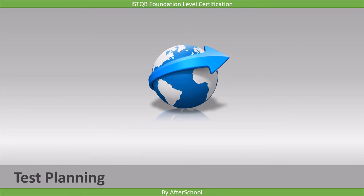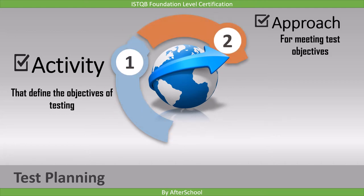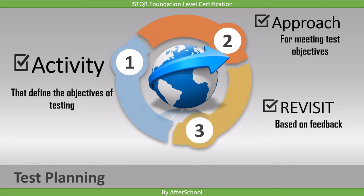Let's first recall the test planning we covered in the foundation level syllabus. Test planning involves activities that define the objectives of testing — it is the stage where we decide what we need to test and what we want to achieve from it. It also includes an approach for meeting test objectives within constraints imposed by the context. We know that testing is context dependent, and based on what we test, we decide in the test planning stage which approach we will use. Test plans may be revisited based on feedback from monitoring and control activities.